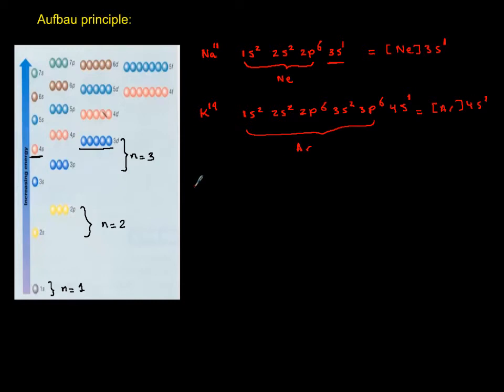Now what happens if we have calcium? Calcium with 20 electrons is 1s2, 2s2, 2p6, 3s2, 3p6. After p comes d, but in nature 4s is lower energy than 3d, so the electrons actually go into 4s and it's 4s2. In terms of noble gas, calcium can be written as argon 4s2.